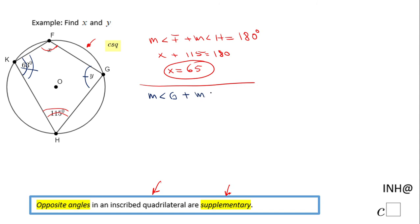So the measure of angle G plus the measure of angle K equals 180 degrees. Angle G is Y, angle K is 63, so Y plus 63 equals 180. The last thing you want to do is subtract 63 from 180.